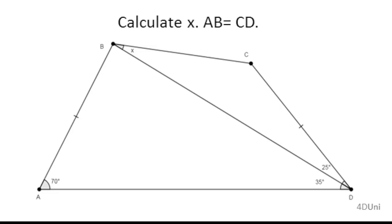From the figure, you have to calculate x, given the angle at A equals 70 degrees, and the angles at D equal 35 degrees and 25 degrees. In addition, the length of AB is equal to the length of CD.